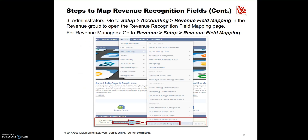For the Administrator role, go to Setup, select Accounting, then Revenue Field Mapping in the Revenue group to open the Revenue Recognition Field Mapping page. For Revenue Managers, you would go to Revenue, select Setup, then Revenue Field Mapping.